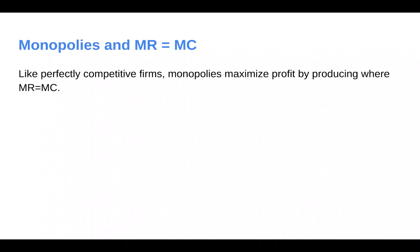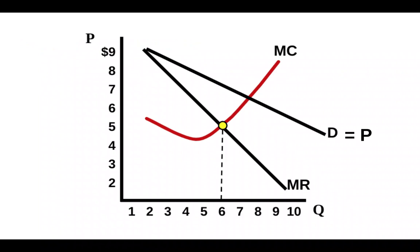So that very important rule around profit maximization still holds here, despite the fact monopolies are quite different from perfectly competitive firms. So if we look at where MR intersects MC, that's at six units. And so that is going to be our profit maximizing quantity.